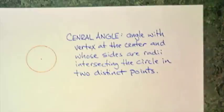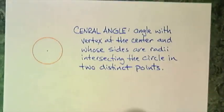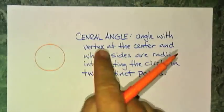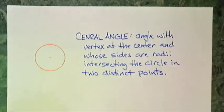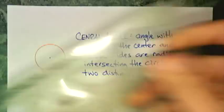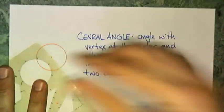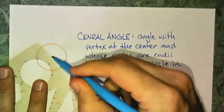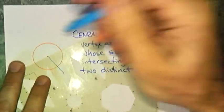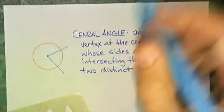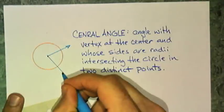Now, another thing associated with arcs is a central angle. And a central angle is an angle with a vertex at the center and whose sides are radii intersecting the circle in two distinct points. So I have a circle. I'm going to make two radii. One, two, and I make a central angle right there.